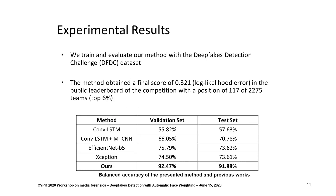We train and evaluate our method with the Deep Fake Detection Challenge dataset previously described. We use the videos that have ground truth labels. Specifically, we use 80% of the videos for training, 10% for validation, and 10% for testing. In the table at the bottom, we can see the balanced accuracy of our method and previous works. Our method outperforms previously presented methods and obtains a total of 91% accuracy on the testing set.